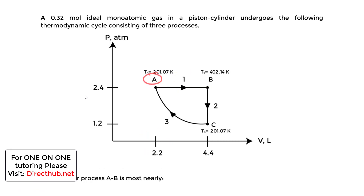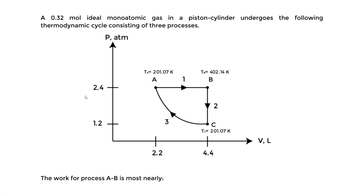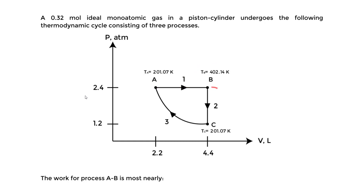From A to B — process one — the gas gets heated at a constant pressure until we reach a new volume of 4.4 liters. The pressure is 2.4 and does not change, but we're adding heat. So from A to B we have constant pressure expansion — we can picture the piston expanding.